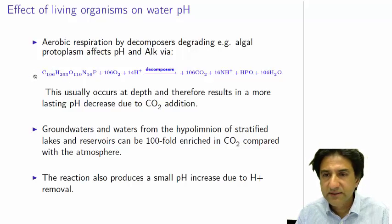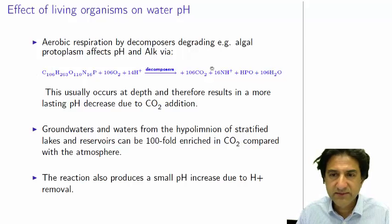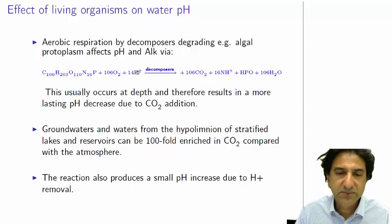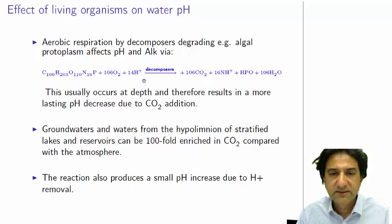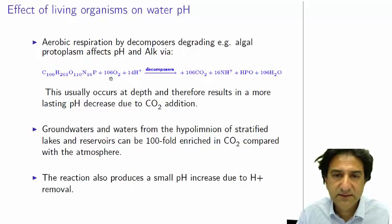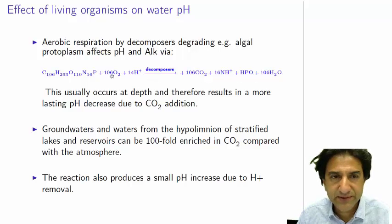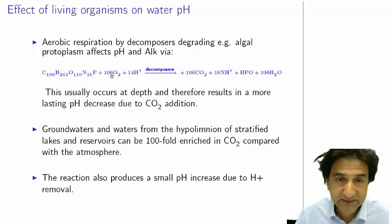So here we have the photosynthesis reaction going from right to left. We see that it requires 16 NH4-plus and it produces 14 H-plus. So there's a slight increase in alkalinity in this reverse reaction. But that's permanent.